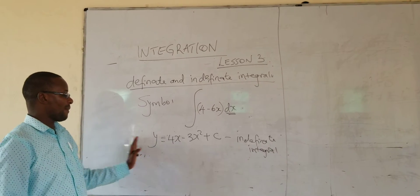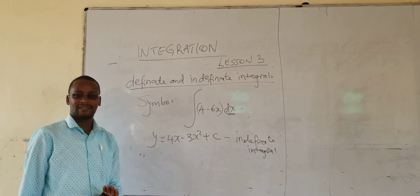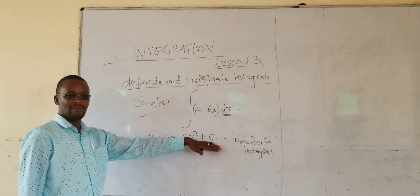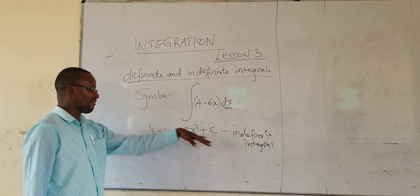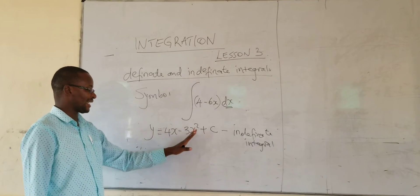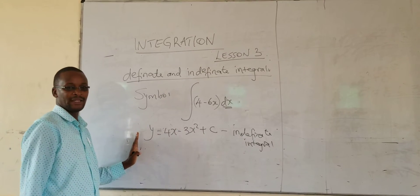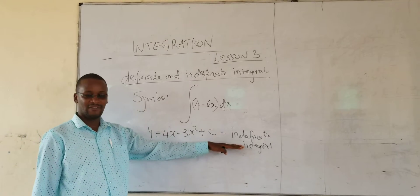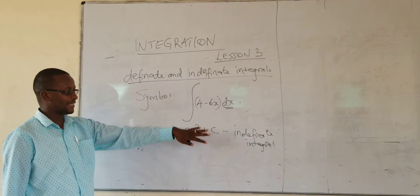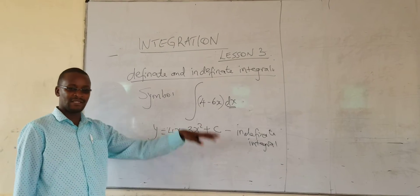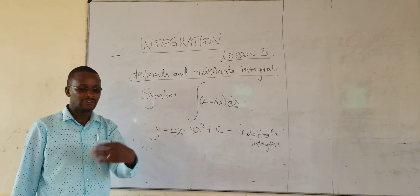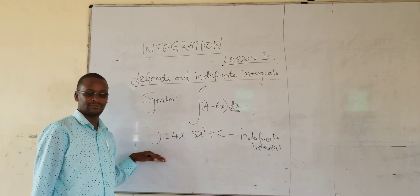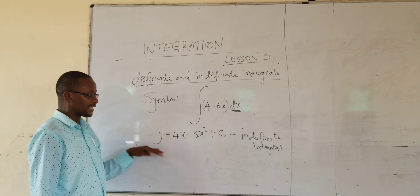There are so many values of Y that I can get. And even if I get this constant the way we did in the previous lesson, there are so many values of X I can get given any value of Y. A different value of X will give me a different value of Y. That's why we call it indefinite — it is not specific. It is not giving me a specific answer like 10, 15, negative 4. It is giving me an equation.